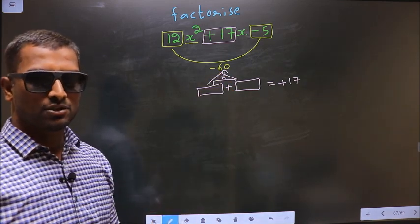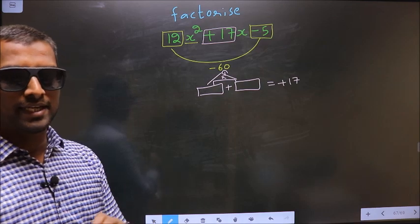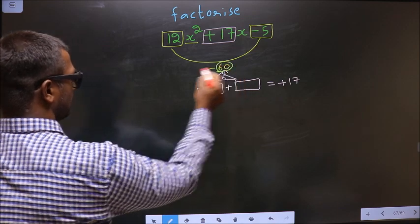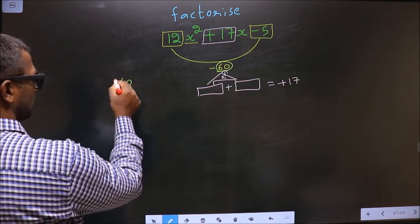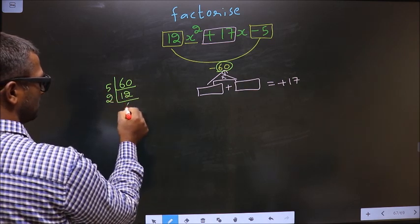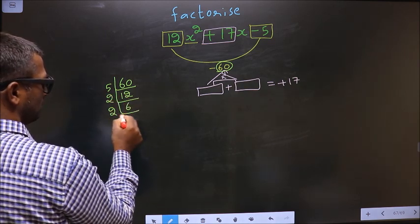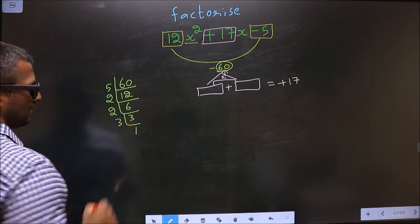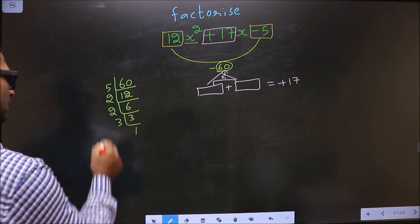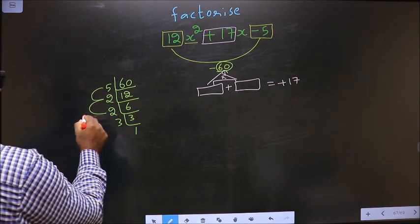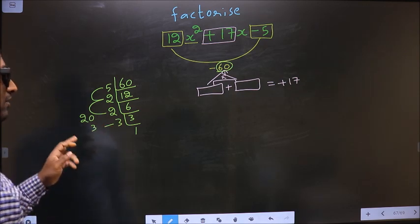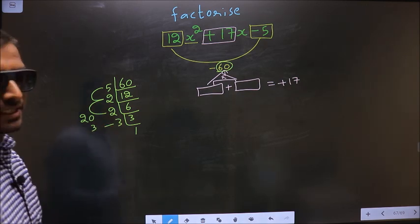To get those two numbers we should take LCM of 60. So I start with 5: 5 ones, 5 twos. Now 2, 6. Now 2, 3. 3 and 1. So now the two numbers should be 5 into 2, 10. 10 into 2, 20. And the second number is 3. 20 minus 3 is 17. 20 into 3 is 60.